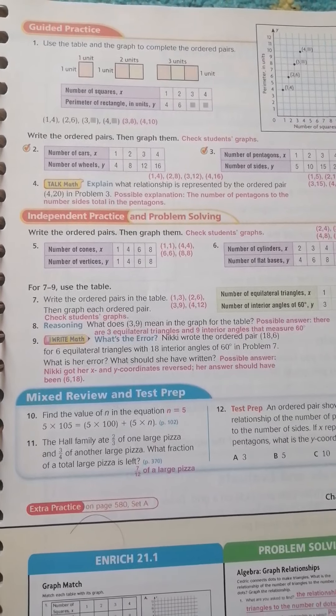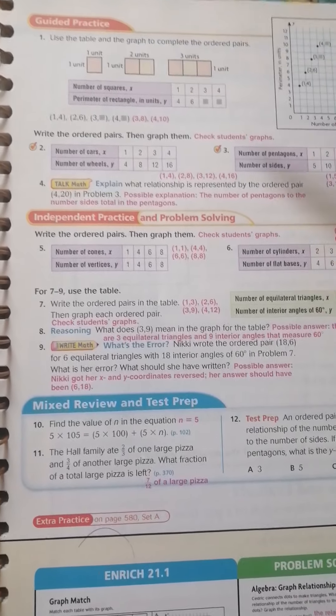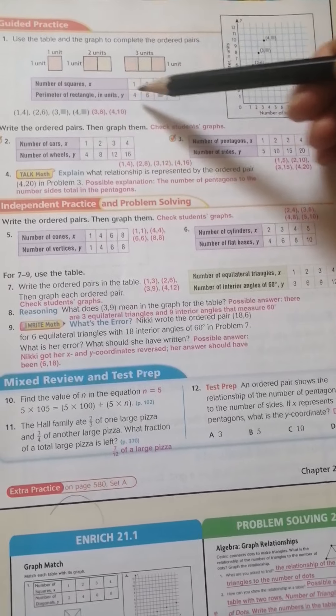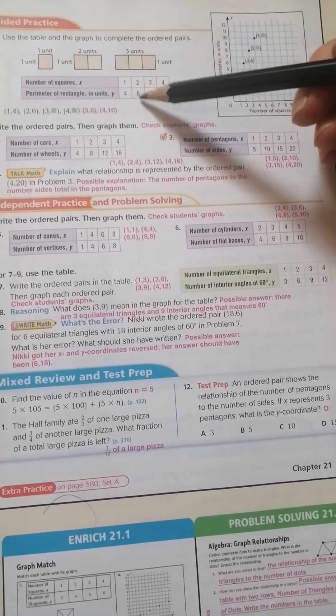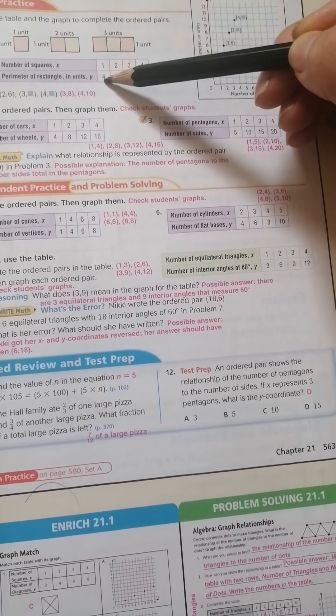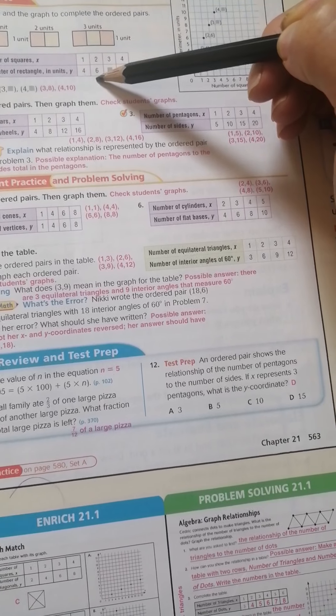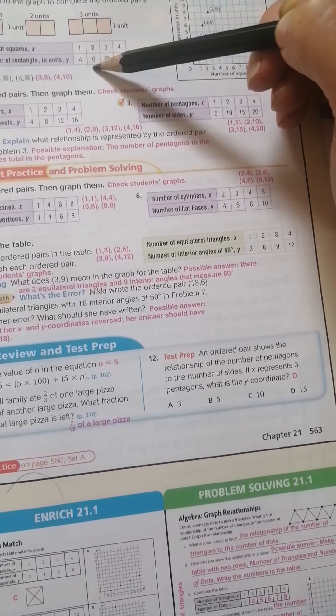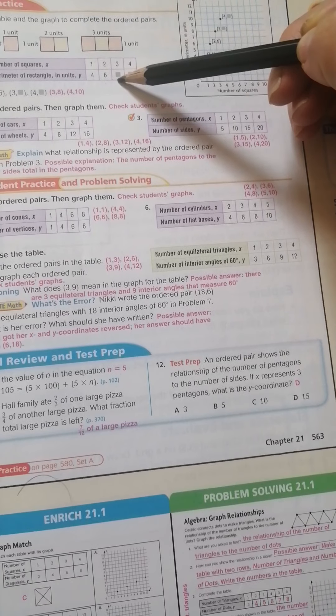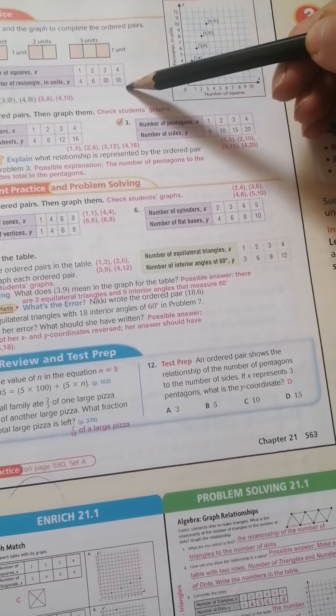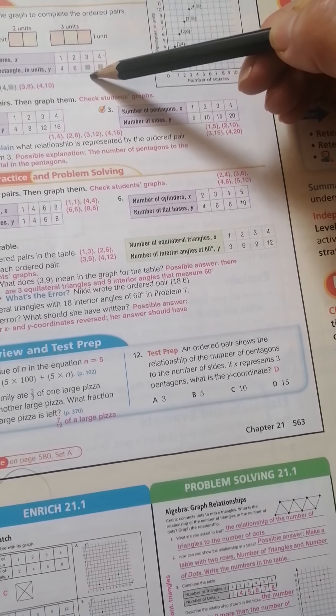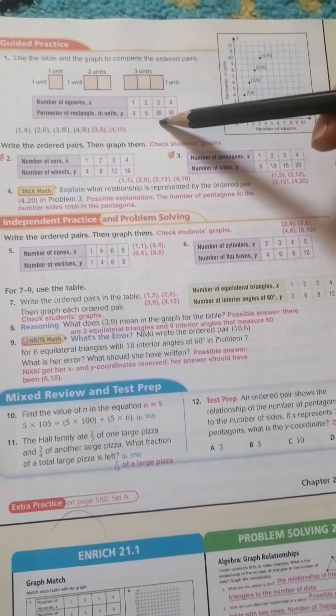Any question. Number of squares: 1, 2, 3, 4. Then perimeter in units y: 4, 6. 4, 6. 1, 4, 2, 6. 3, how many? And 4, how many? 1, 4, 2, 6. Then 3. What's the rule here?